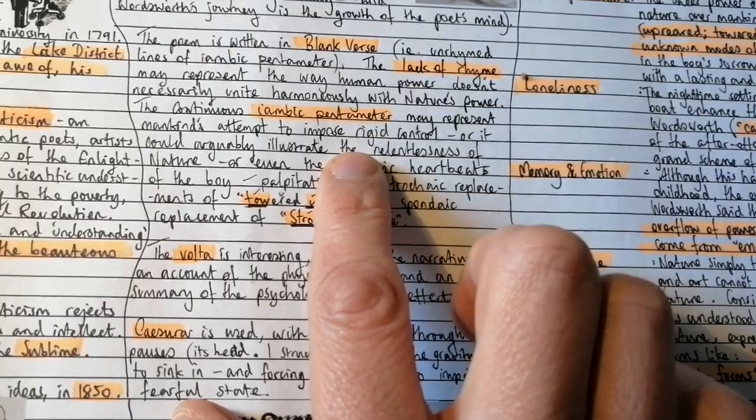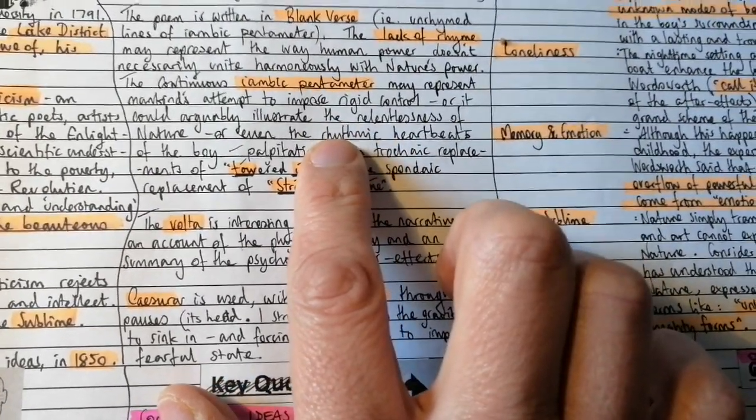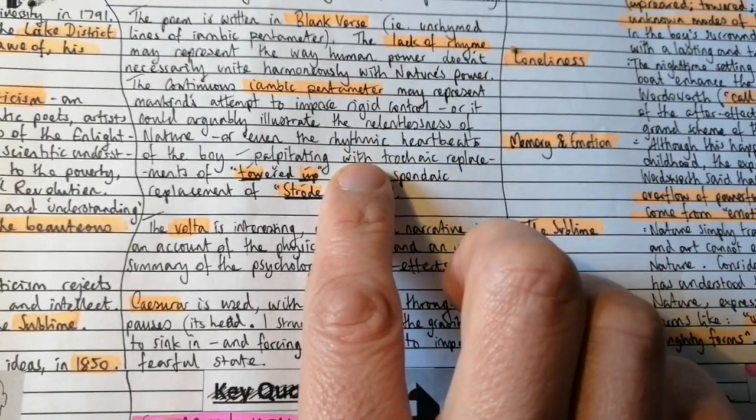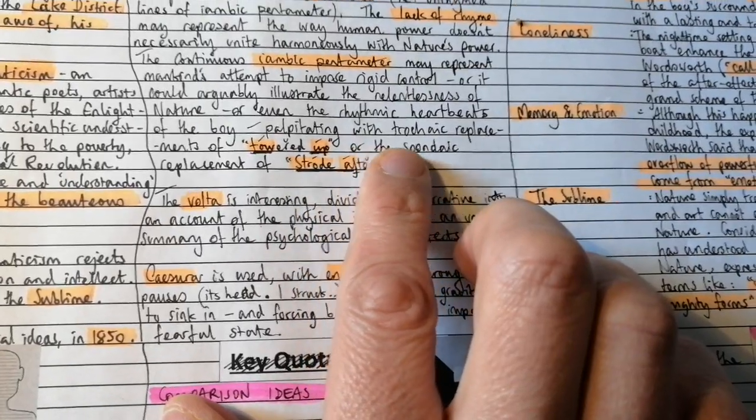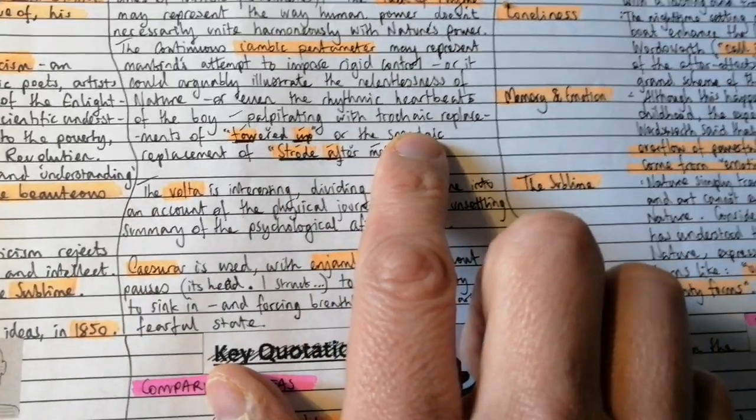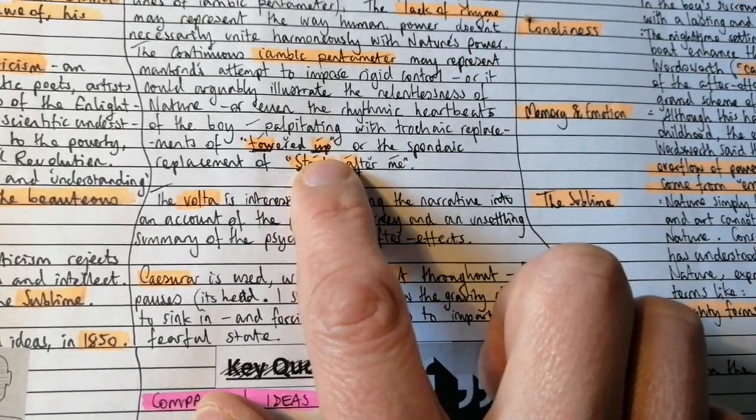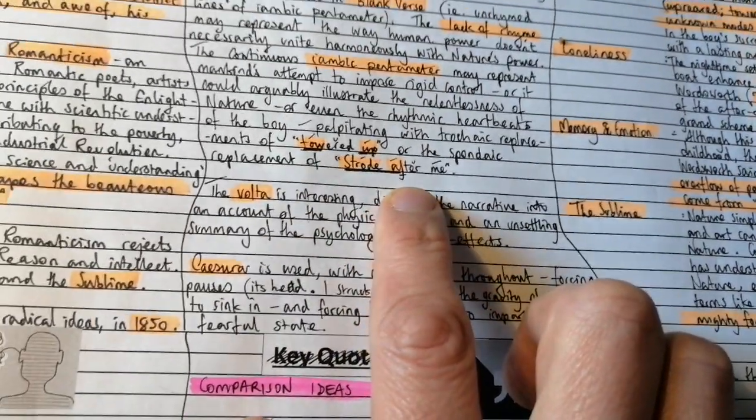It could represent the way that human power doesn't necessarily unite harmoniously with nature's power and that the continuous iambic pentameter may represent mankind's attempt to impose rigid control. Or it could arguably illustrate the relentlessness of nature or even the rhythmic heartbeat of the boy palpitating, as we explained with the annotations before, with the trochaic replacements of towered up and the spondaic replacement of strode after me.